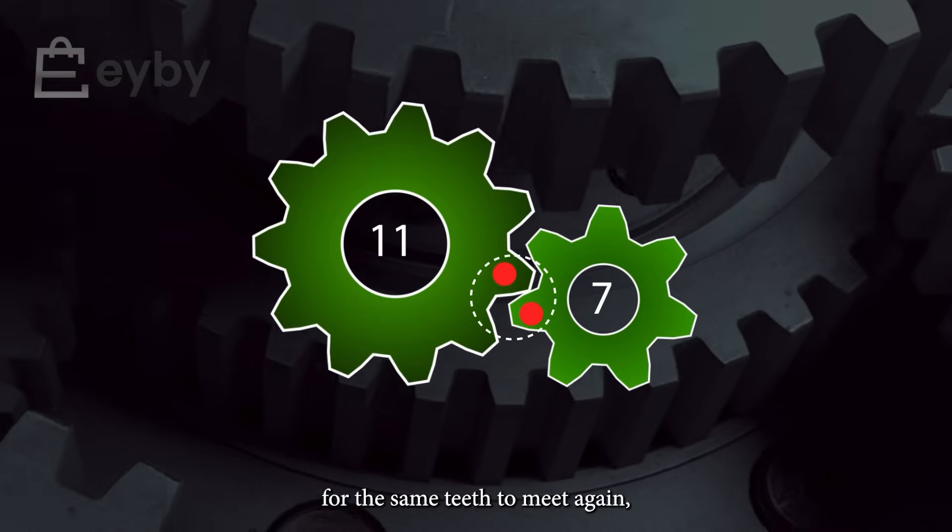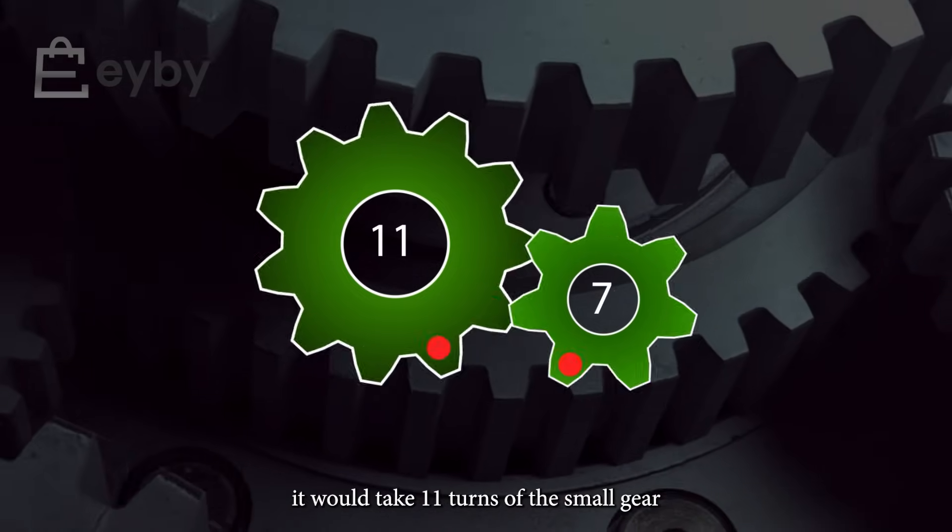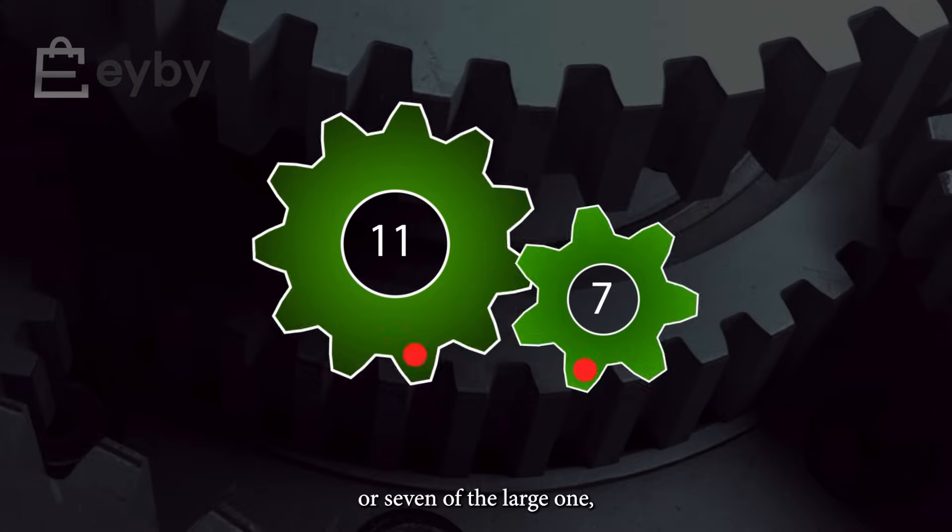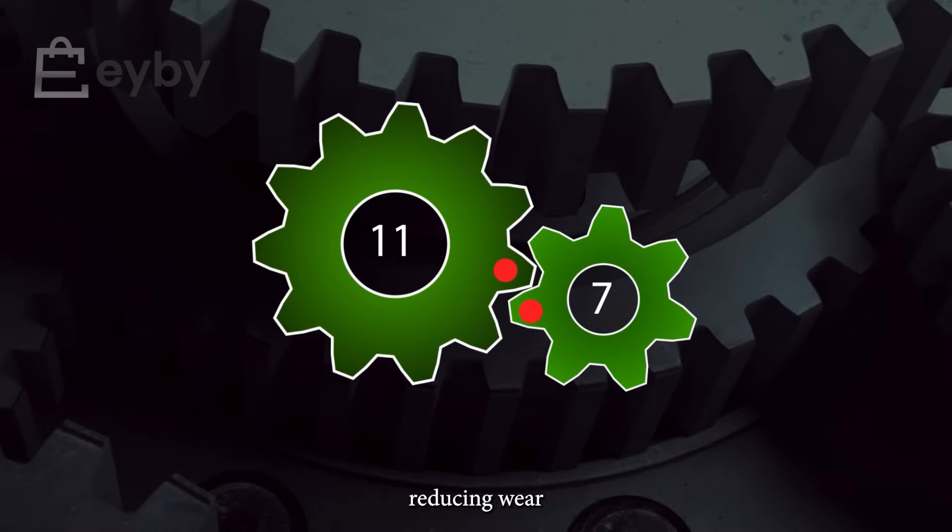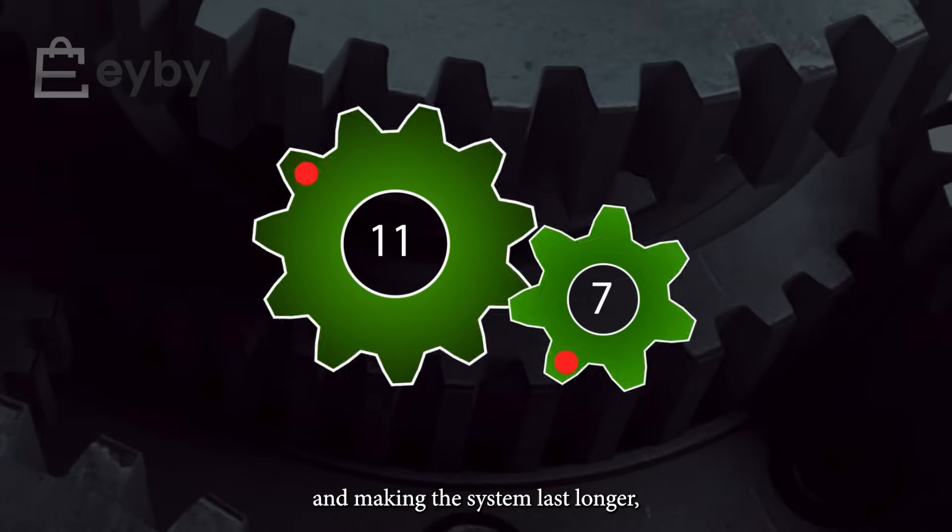In fact, for the same teeth to meet again, it would take 11 turns of the small gear or 7 of the large one, reducing wear and making the system last longer.